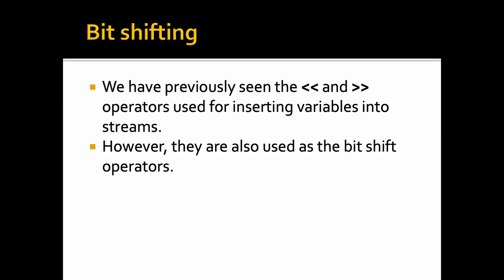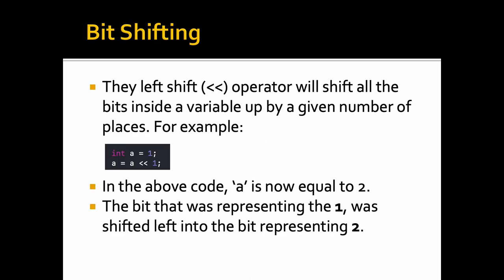Let's now look at some of the bitwise operators. We have previously seen the double less-than and double greater-than symbols used as operators for inserting variables into streams. However, these are also used as the bit shift operators. The left shift operator will shift all the bits inside a variable up by a given number of places. For example, if int a equals 1 and we say a equals a shift 1, a is now equal to 2 — the bit representing 1 was shifted left into the bit representing 2.